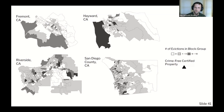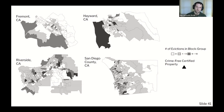To evaluate this, we needed data both on evictions and on the policy. This is difficult in California because records are sealed across the state as part of AB 2819, so there's no data available on evictions below the county level. We used public records requests to obtain geocoded eviction data at the address level, displayed here as the amount of evictions occurring in block groups — about 1,000 to 1,500 people — which are a pretty small area within cities.